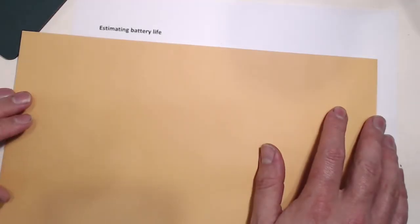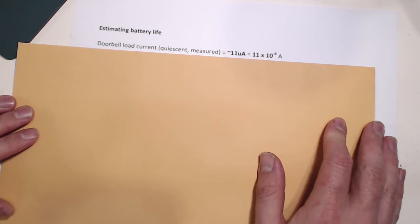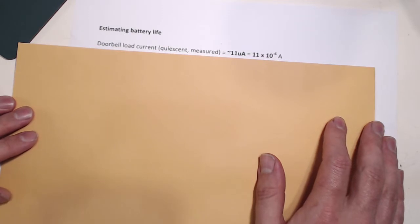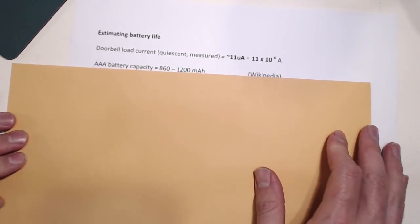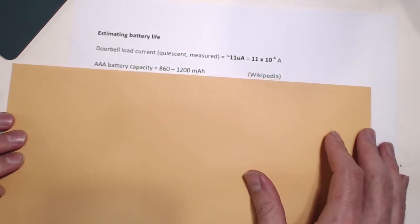We've determined that the device uses around 10-11 microamps when it's sitting there doing nothing, which is the state the doorbell is in most of its time. So, how do we go about estimating the battery life?